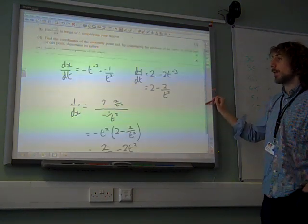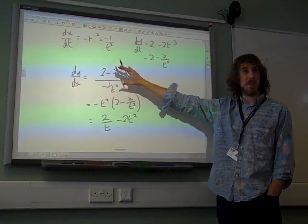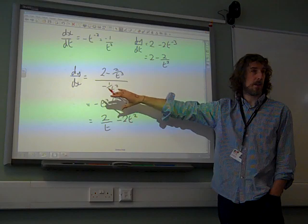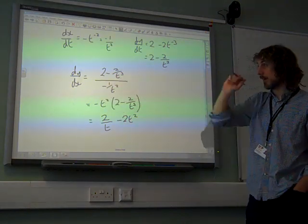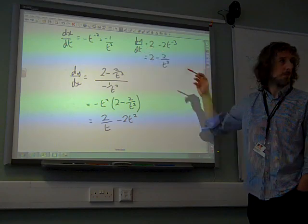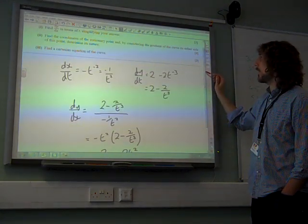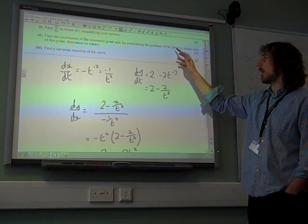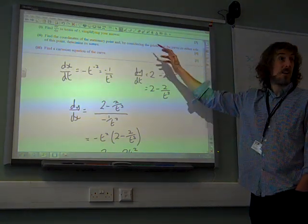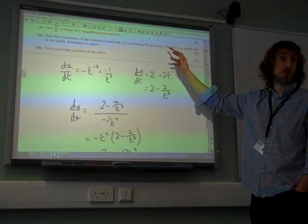Part 2. Find the coordinates. There were quite a few people, by the way, who got really kind of tied in knots about this bit, about how we simplify this. Trying to keep things as simple as we can. We're dividing by a fraction, so let's multiply by its reciprocal. Part 2, find the coordinates of the stationary point. And by considering the gradient of the curve on either side of this point, determine its nature. This was a really nasty second bit of this question.